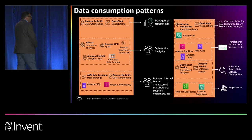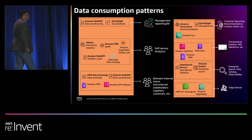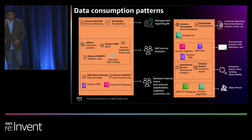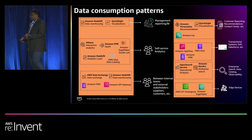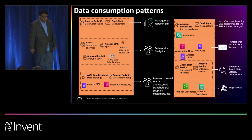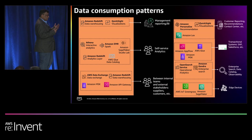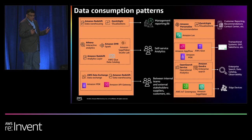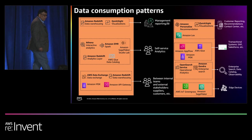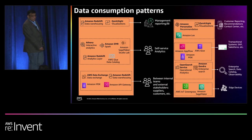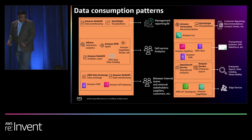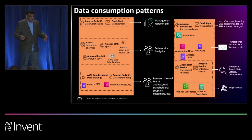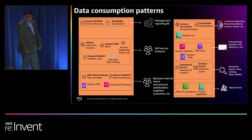You can empower all personas by using AWS modern data architecture. Let us take a look at a few data consumption patterns. Use Amazon Redshift and Amazon QuickSight for business intelligence dashboards. Use Athena, Amazon EMR, and Amazon Redshift for self-service analytics. You can also use Amazon Redshift data sharing and AWS Data Exchange to exchange data between internal and external users. You can use Amazon Kendra and Amazon OpenSearch services for enterprise search and observability use cases.